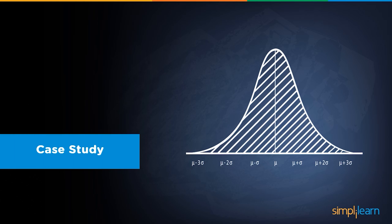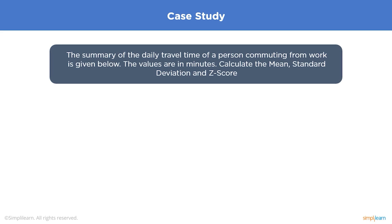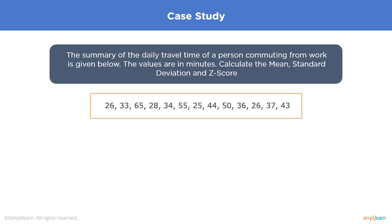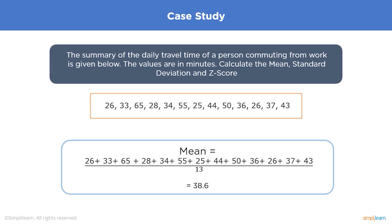In this case study, we take the summary of daily travel times (in minutes) of a person commuting to and from work — 13 values in total. We calculate the mean, standard deviation, and z-score. The mean is found by adding all values and dividing by 13, giving us 38.6 minutes — meaning on average, the person travels 38.6 minutes to reach work.